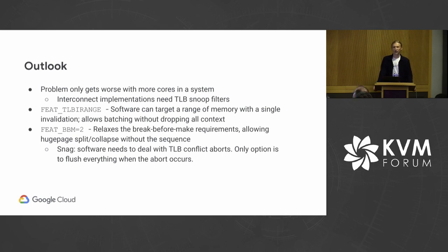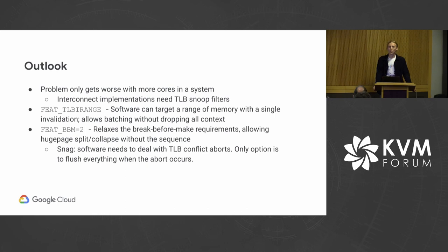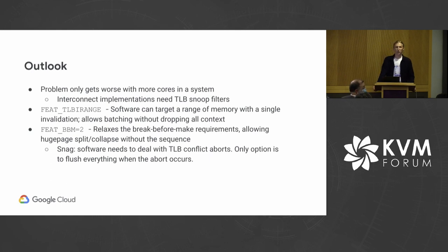Will asked about using VMIDs — having a separate VMID for the dirty logging phase where we map at 4K granularity and another for the highest granularity. That hadn't been considered yet, but it certainly sounds like a good option to research. David asked whether the architecture clarifies who gets the TLB conflict abort with level 2 break before make. The answer is EL2, so KVM will get to handle the TLB conflict.